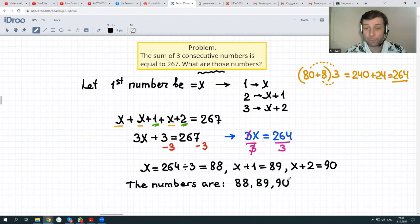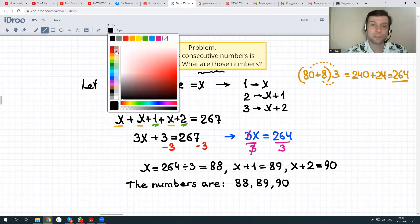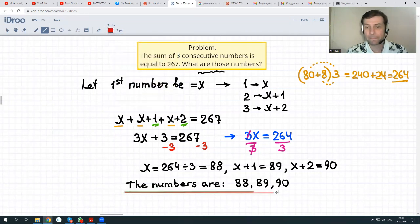If you add them up, you'll see the sum is equal to 267. Means we did everything correctly. This is the answer to our problem.